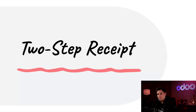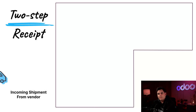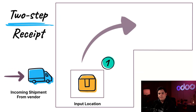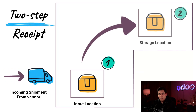More complex workflows may require two-step receipts. Two-step receipts are useful when products are first received into an input area before moving into stock. This is ideal when incoming items need to be sorted at the input location, or when separate teams handle unboxing shipments and putting things away in storage.